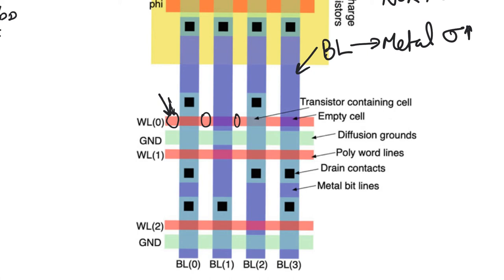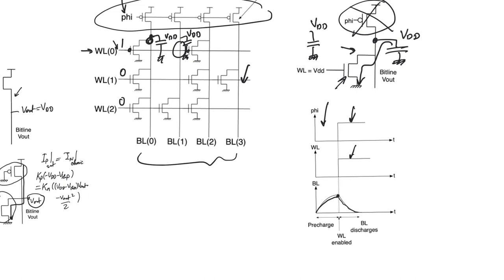In cells without a transistor, the bit line metal and word line polysilicon simply cross over each other with no connection. In cells with a transistor, a diffusion layer runs beneath the metal, creating the NMOS channel where polysilicon crosses it. The metal contacts the diffusion at the drain, while a horizontal diffusion strip at the bottom serves as the source connection to ground.